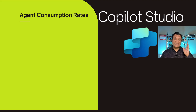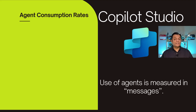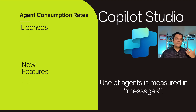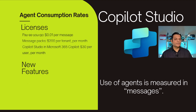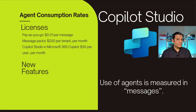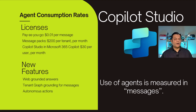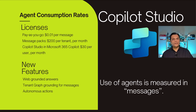The big announcement was about the agent consumption rate — these agents are now measured in messages. For licensing, new options were introduced: pay as you go at one cent per message, message packs at $200 per tenant, and a combination of Copilot Studio and Microsoft 365 Copilot. New features announced included web grounded answers, tenant graph grounding for messages, and autonomous actions.